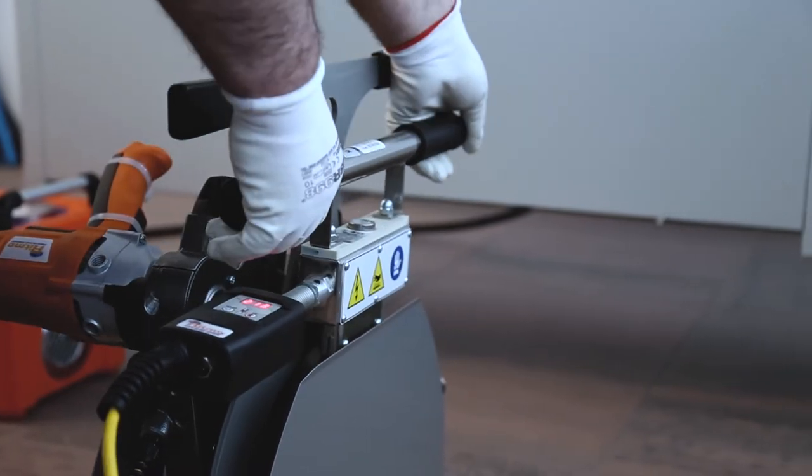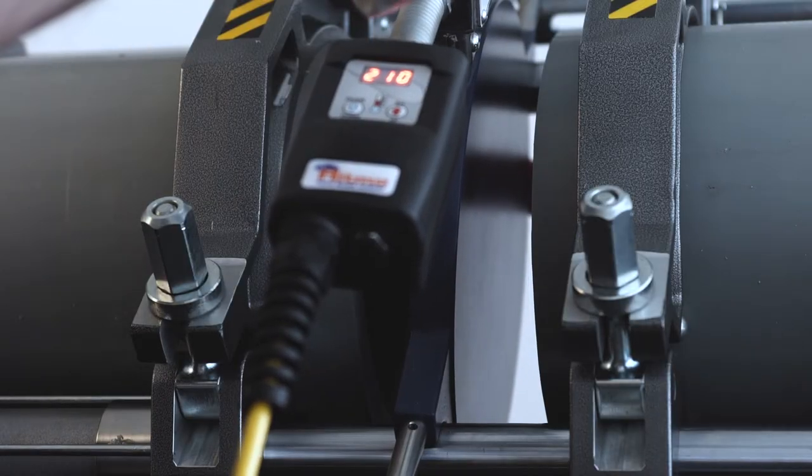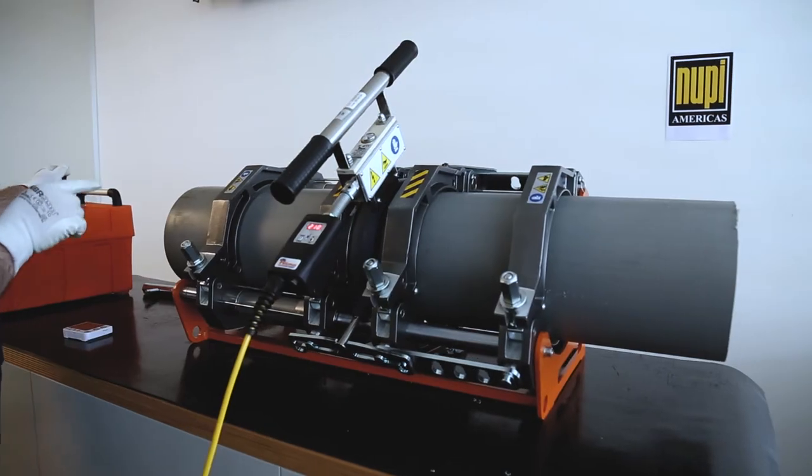When you are ready to weld, place the heating element on the welding machine. Place the edges close to the heating element and apply initial welding force. Wait until the bead has reached a specified height on both welding edges.